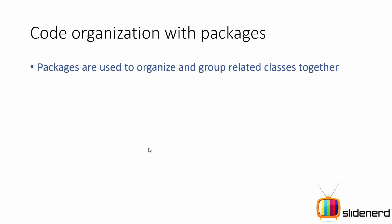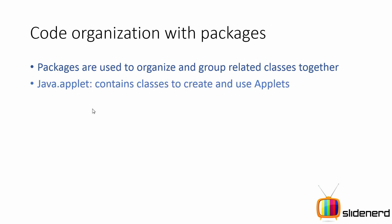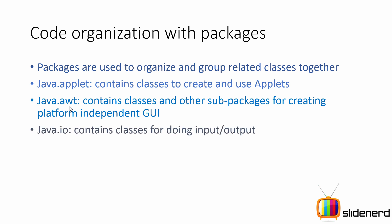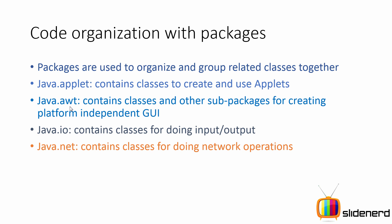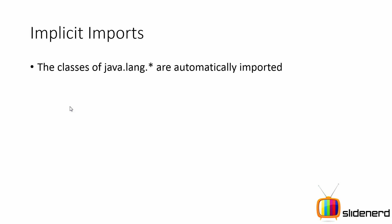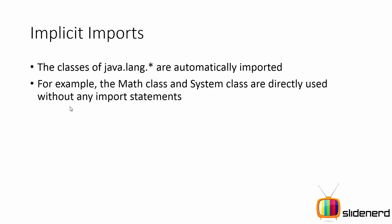Now here are some standard packages in Java. 'java.applet' contains classes to create and use applets. 'java.awt.*' lets you create a user interface on your desktop. 'java.io' contains classes for input/output — reading from and writing to files. 'java.net' contains classes for network operations like opening HTTP or HTTPS pages. 'java.util' contains data structures and collections, which we'll take a look at in upcoming videos. Also note that you never have to import 'java.lang' — things like String, Math, and System are automatically imported for you.